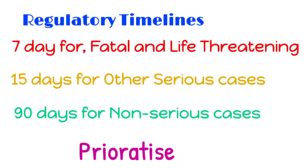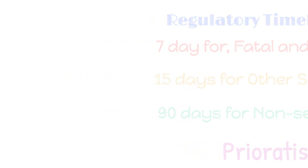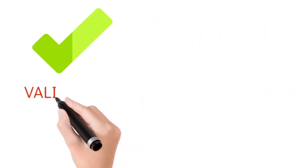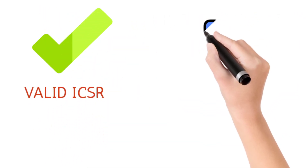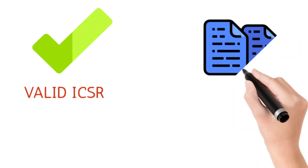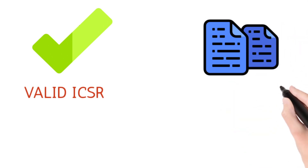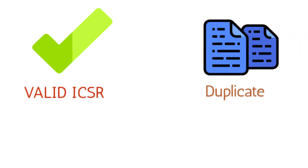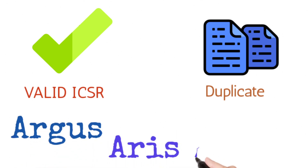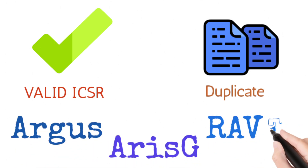You need to prioritize the reports as per seriousness. The process starts with confirmation of valid reports. Once a report is valid, you need to search for duplicate reports, if any, in the safety database. Safety databases most commonly used are Argus, Aris-G, Rave, etc.